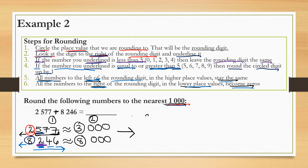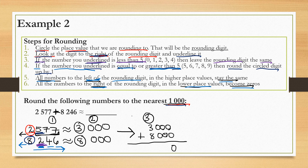Our final step is to add the numbers that we just rounded, since we were asked to add the two numbers together. So 3,000 plus 8,000. 0 plus 0 is 0, three times. And 3 plus 8 is 11 — there are no further numbers to add, so we include both digits below the line. Therefore, 2,577 plus 8,246 is approximately equal to 11,000 when we round to the nearest thousand.